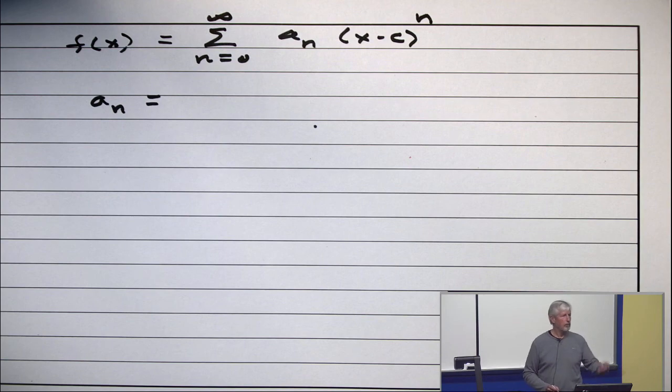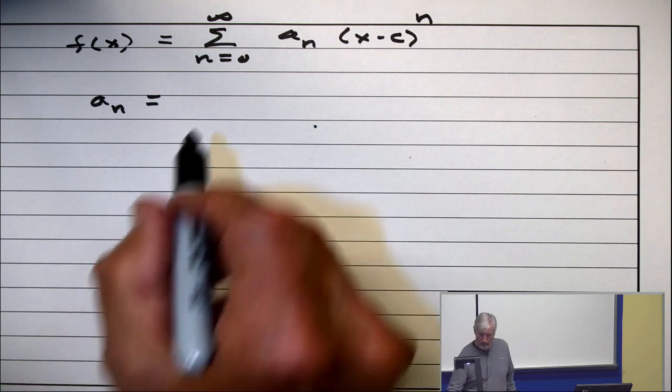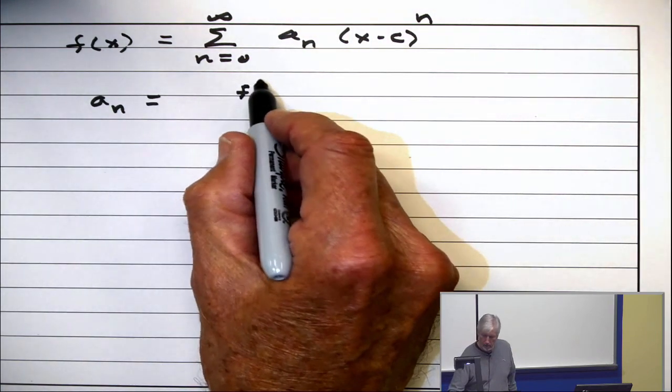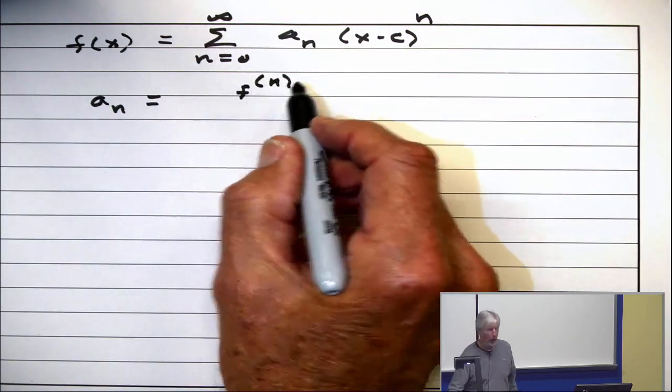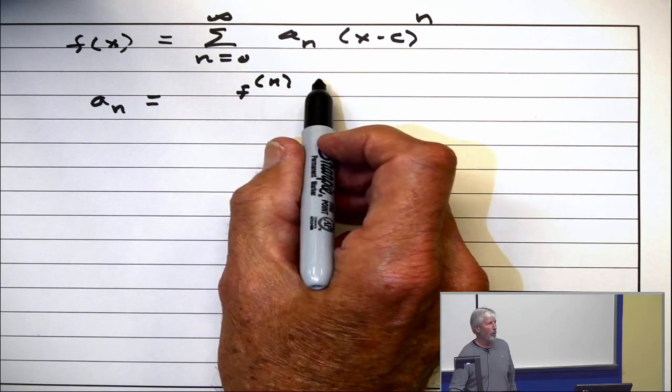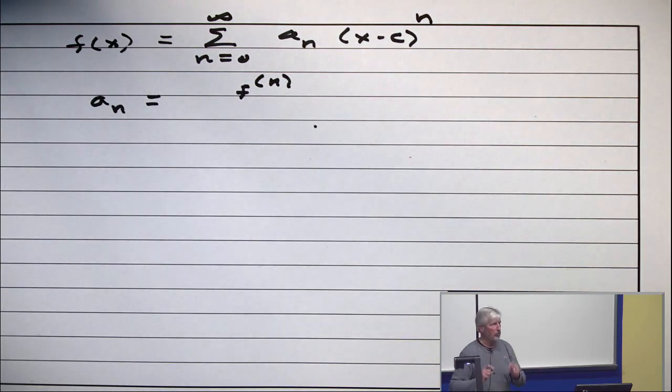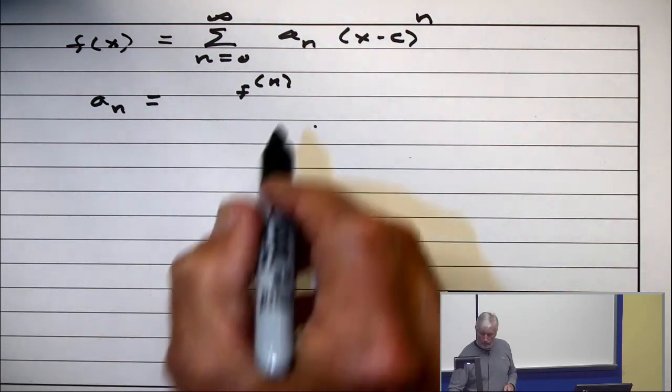You're nodding? What is it? It's the nth derivative of your function at c. It's the nth derivative, so if you put an exponent but in parentheses, and that means the nth derivative of the function.